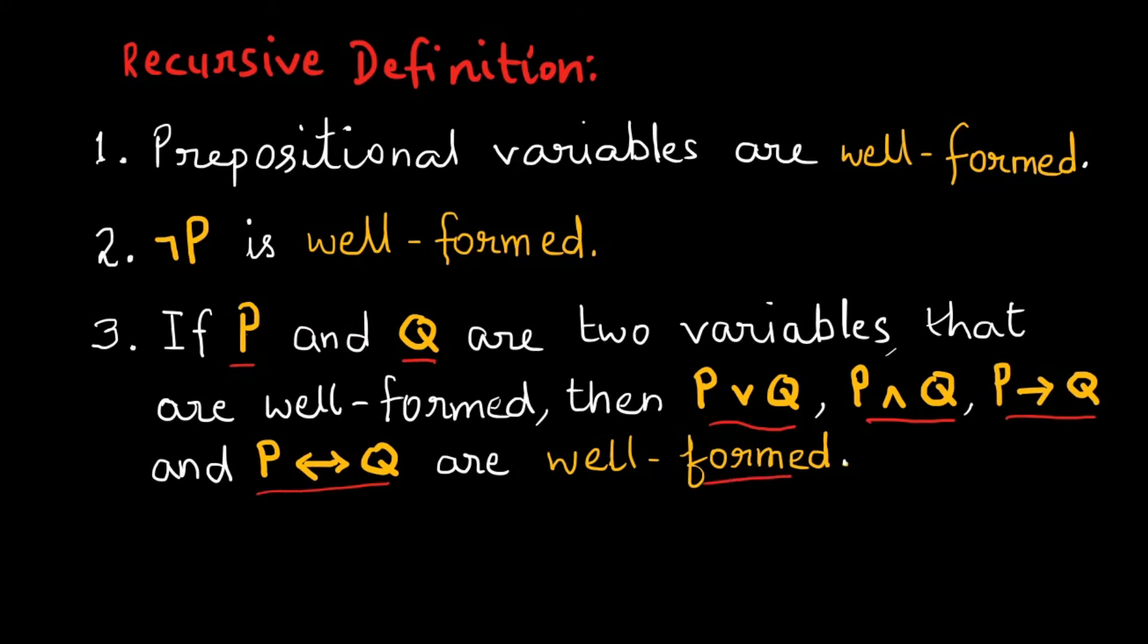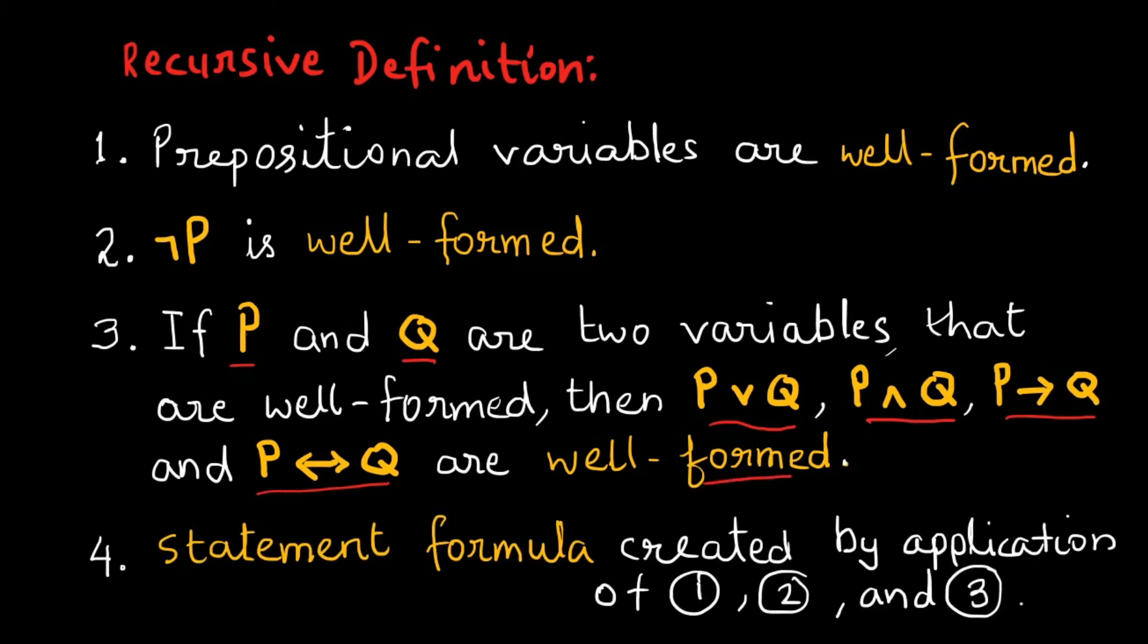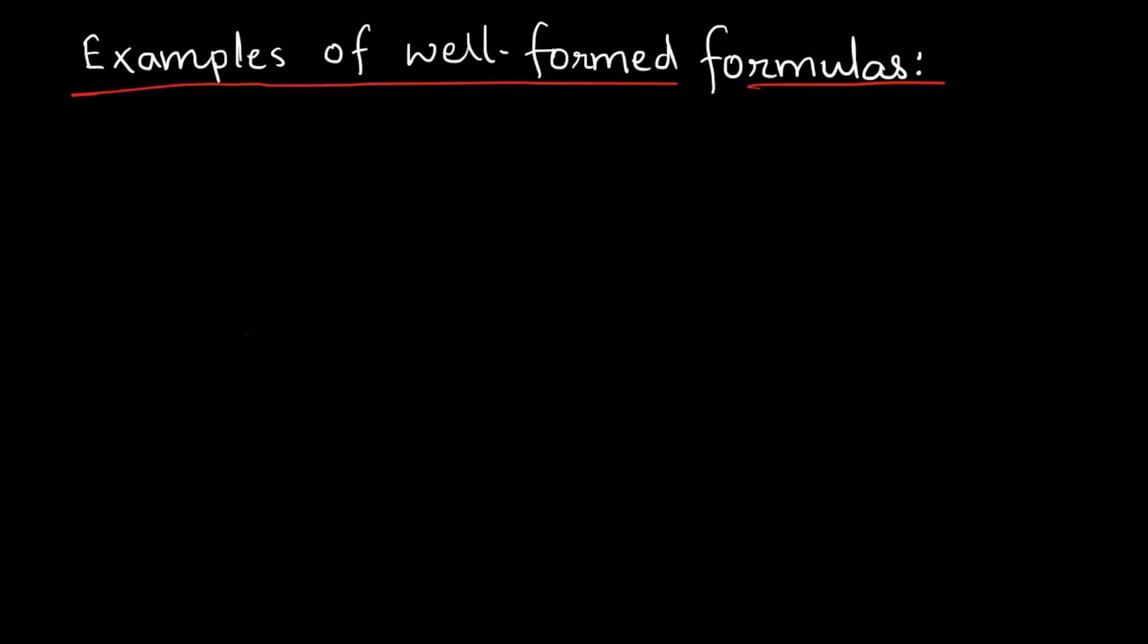Any statement formula constructed using variables, connectives, or parentheses by limited application of rules one, two, and three are well-formed formulas. Let us see some examples of well-formed formulas: (P or Q), P and (Q or R), and P implies (Q implies R).